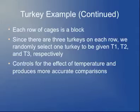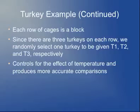In the turkey example, since the height of the cage is the major confounding variable, you take each row of cages as a block: the three cages on the floor are one block, three cages on the second row are a block, three on the third row are a block, and so on. Within each block, you randomly assign one turkey to get T1, one to get T2, and one to get T3. That way, it ensures you'll have exactly one turkey getting each treatment at each height, which should eliminate the confounding effect of temperature when you compare the three groups.